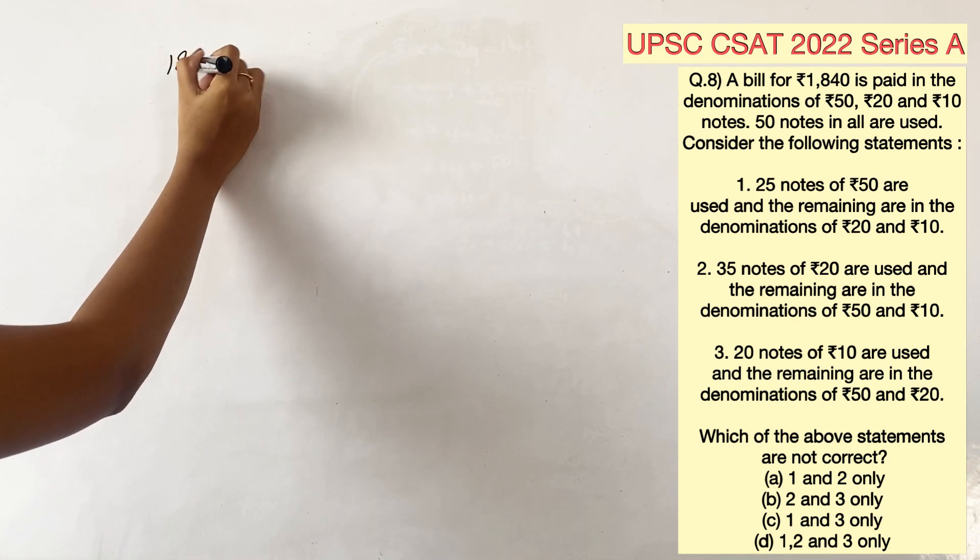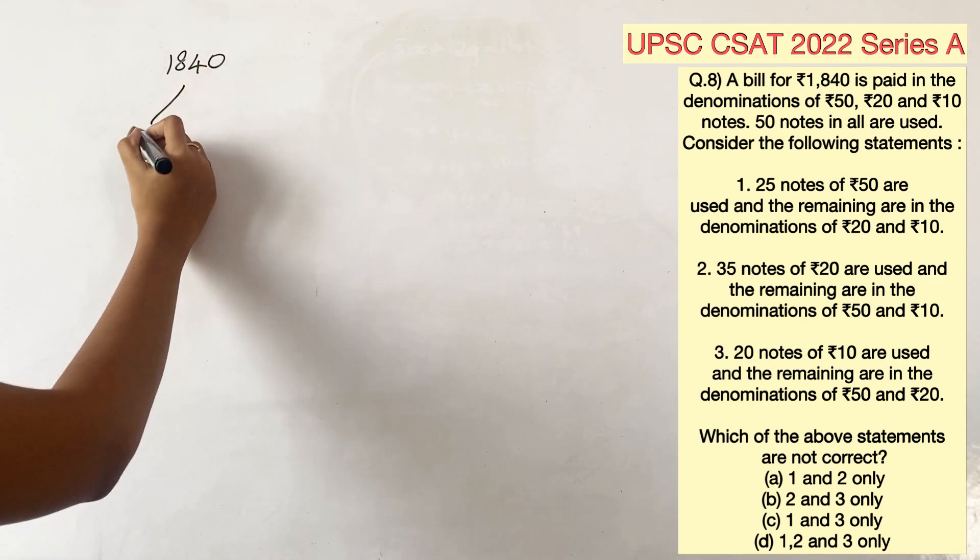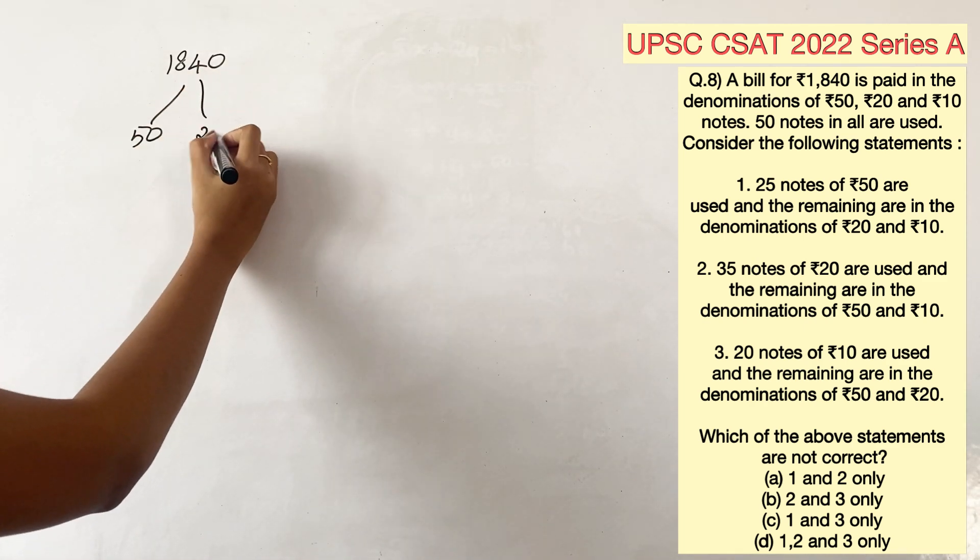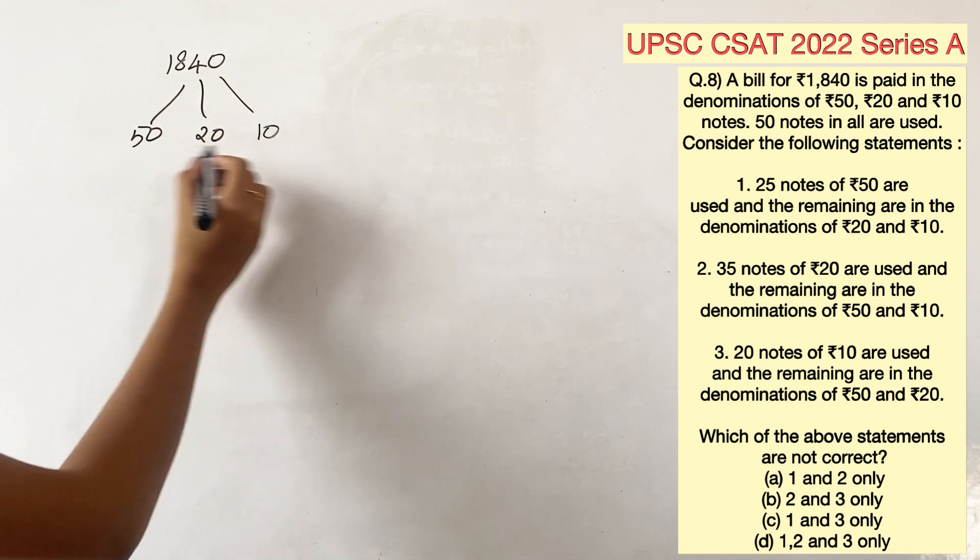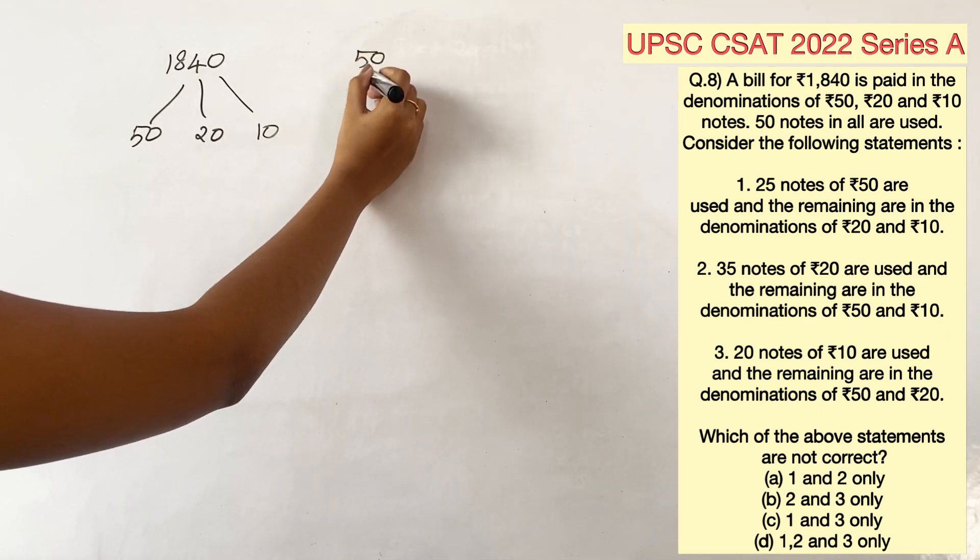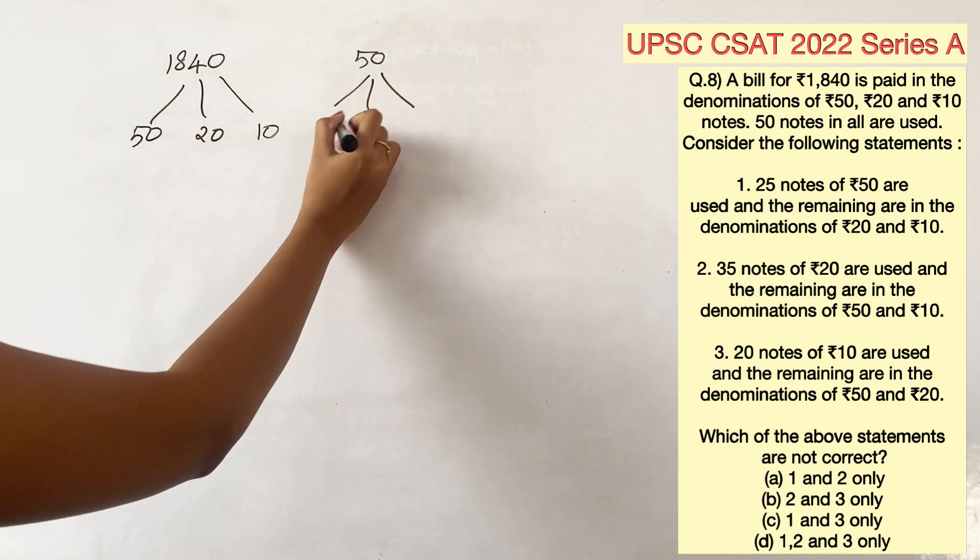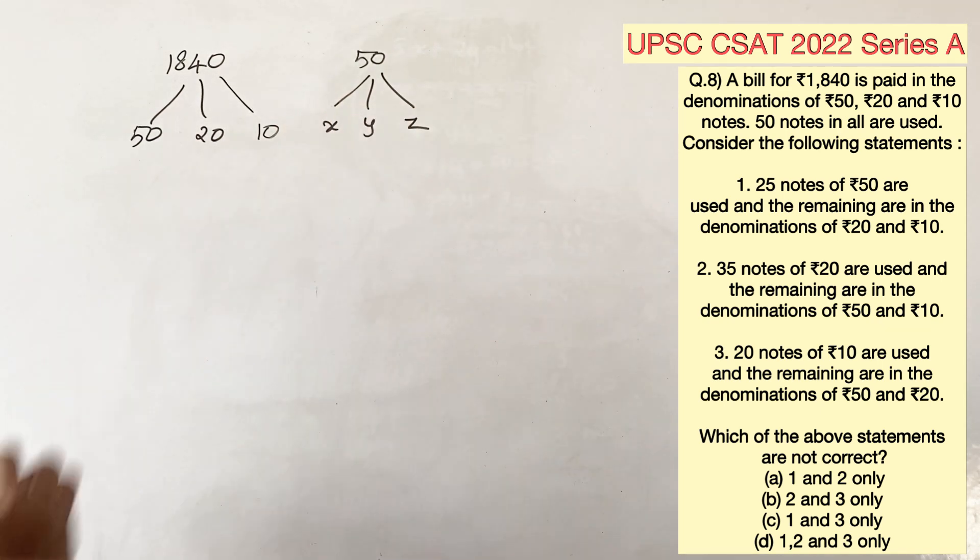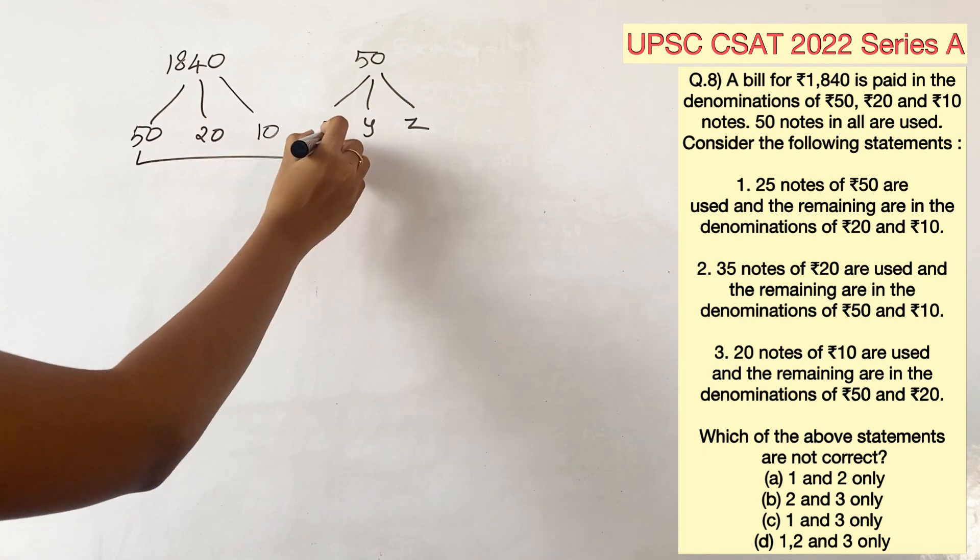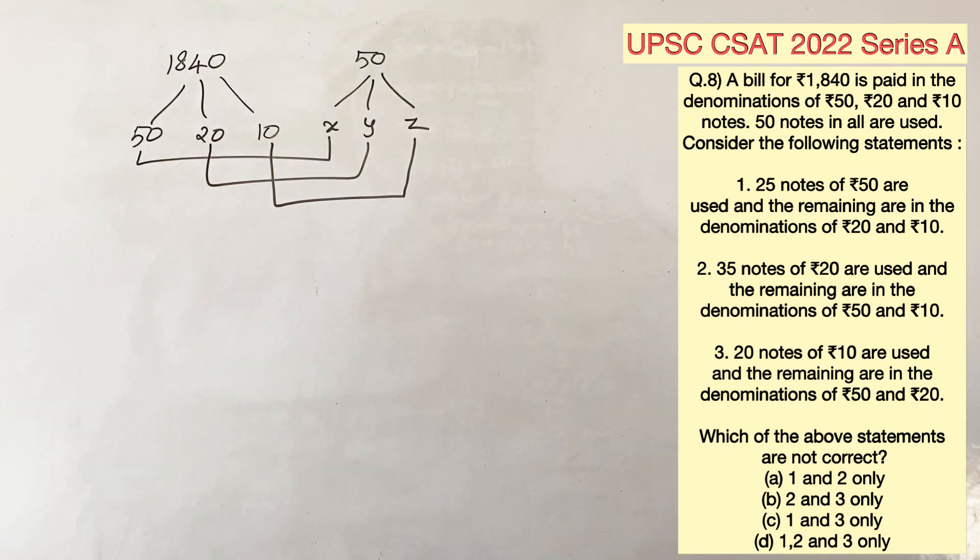The question says a bill for rupees 1840 is paid in the denominations of 50, 20 and 10. It also says that 50 notes in all are used. Let's take it as x, y and z, where x corresponds to the number of 50 rupees notes, y corresponds to the number of 20 rupee notes, and z corresponds to the number of 10 rupee notes.